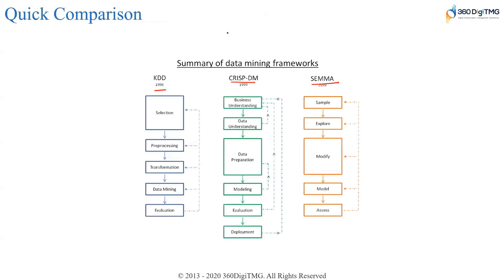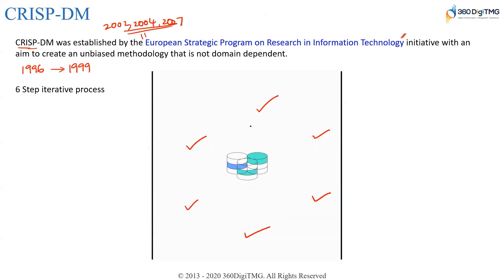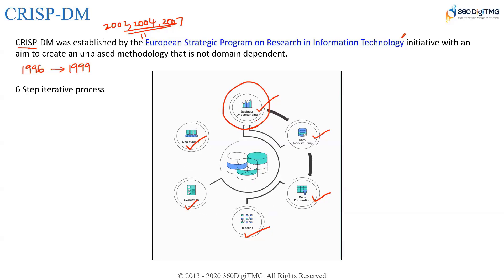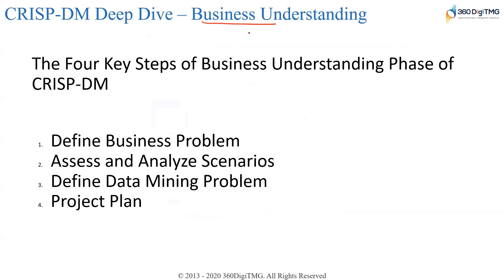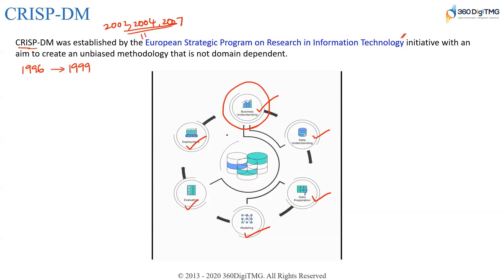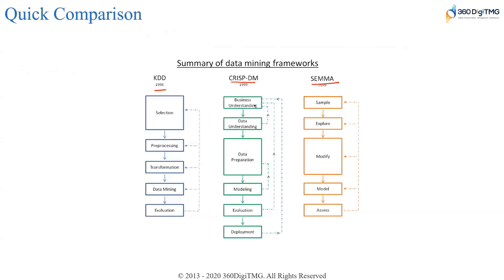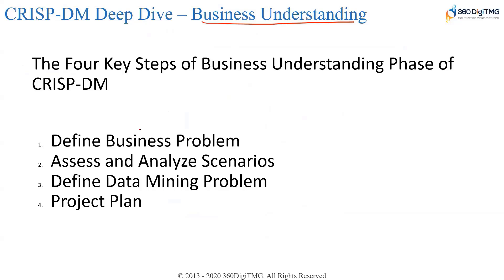The first step of CRISP-DM is business understanding. Let's do a deep dive into each of those six steps, starting from business understanding. This business understanding is going to kickstart your project — it is the initial phase, which you cannot at any cost avoid.